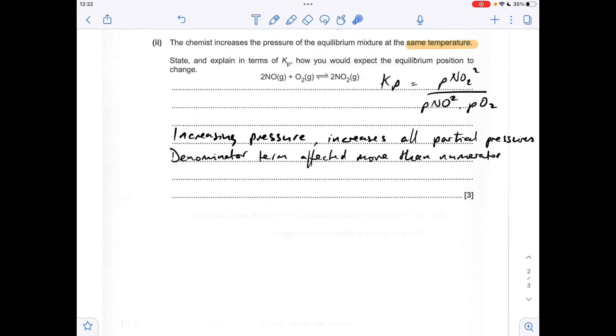So because we're at the same temperature, Kp can't change, so to maintain Kp, this needs to increase, the partial pressure of the NO2 needs to increase, and the partial pressures of these, the NO2, they need to decrease.